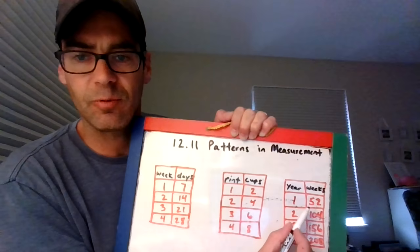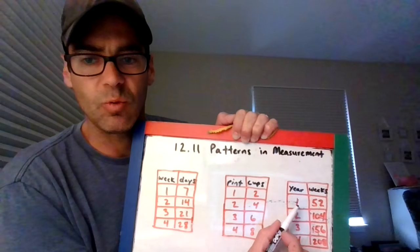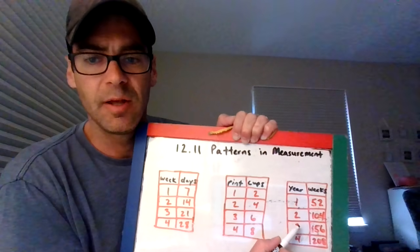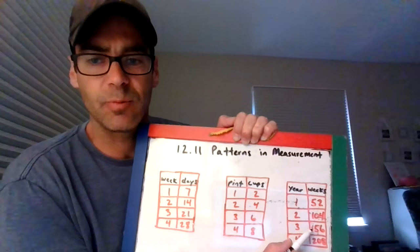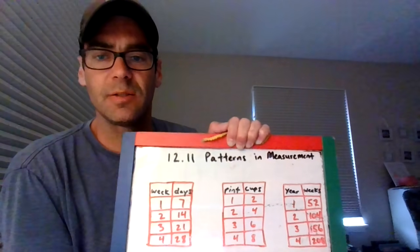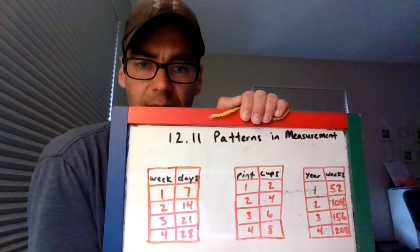Our headings over here would be years and weeks. So one year is 52 weeks, two years is 104 weeks, three years is 156 weeks, and four years equals 208 weeks. That is what we're doing today.